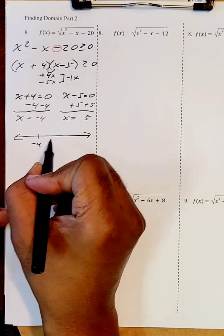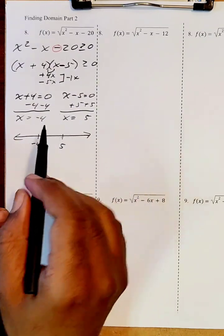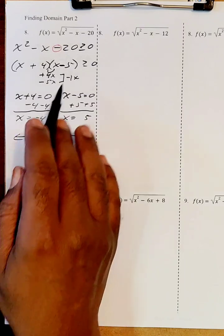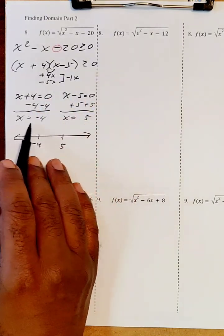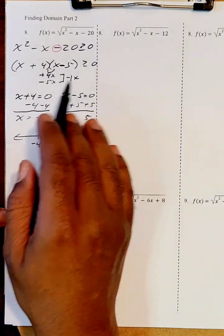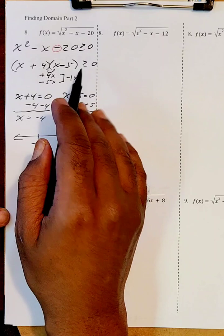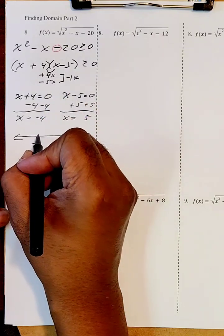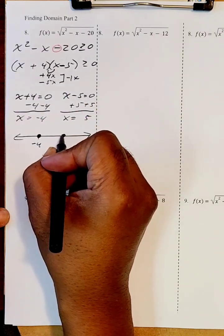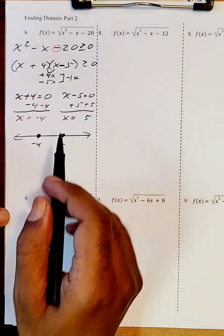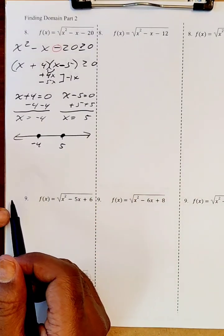I'm going to put negative four and five on the number line and make them solid because equals zero — these are made equal to zero — is usable for the domain. You can have x values that make the expression equal to zero.